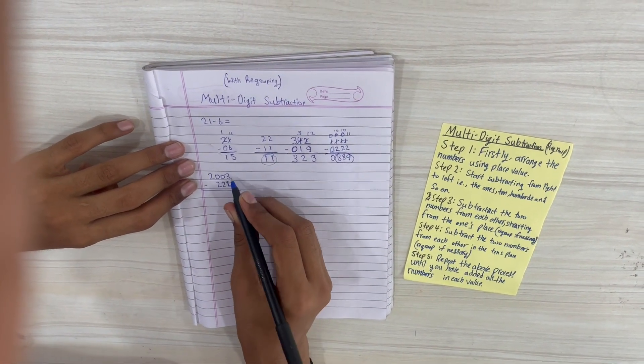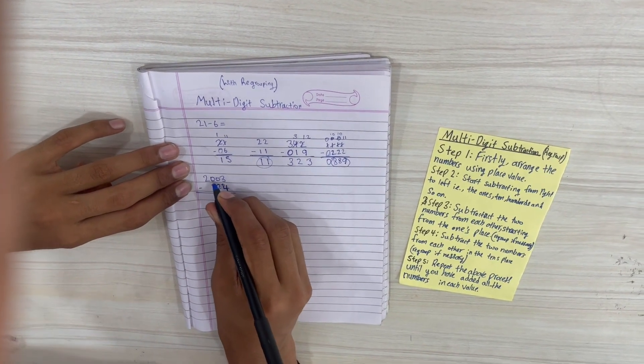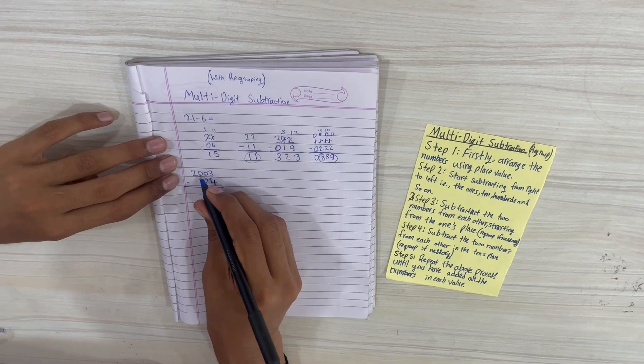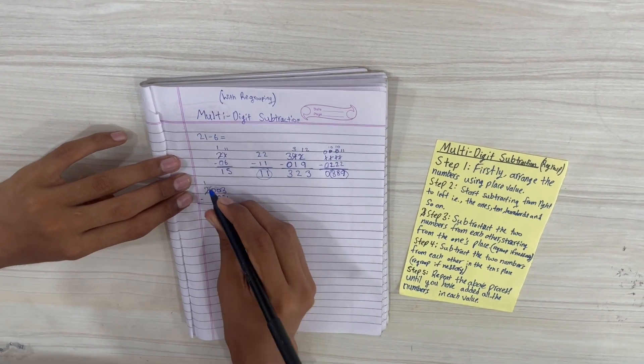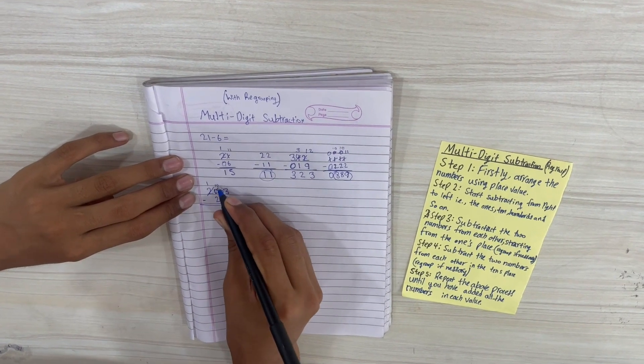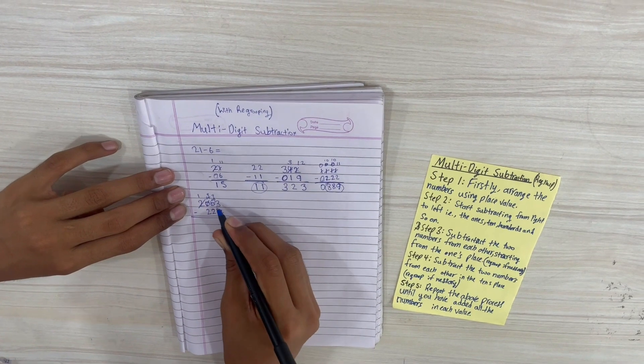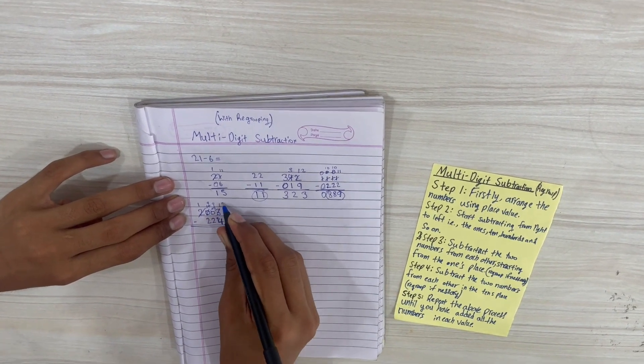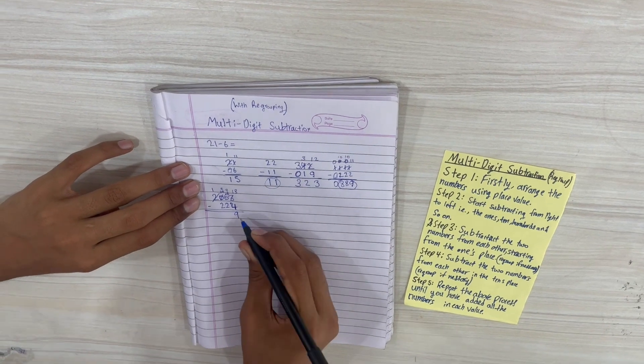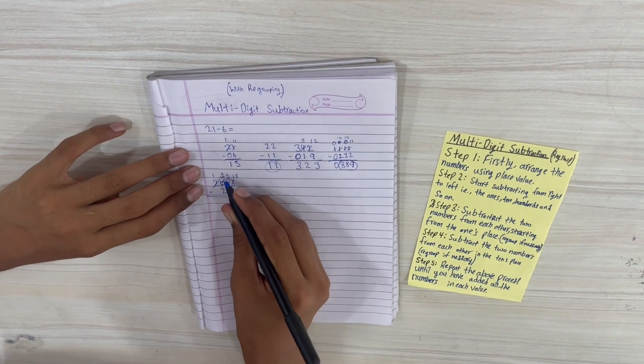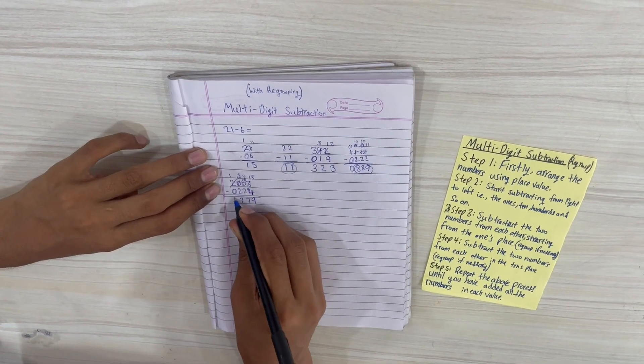We turn 2 into a 1, give 10 to this, again make that a 9, give 10 to this, make it a 9, and we finally make this a 13. 13 minus 4 is equal to 9. 9 minus 2 is equal to 7. 9 minus 2 is equal to 7. 1 minus 0 is equal to 1.